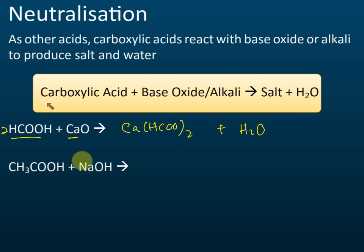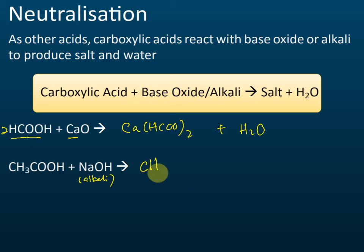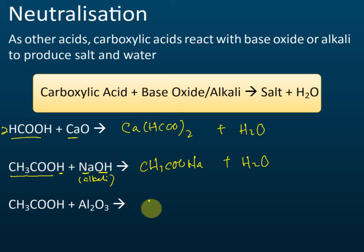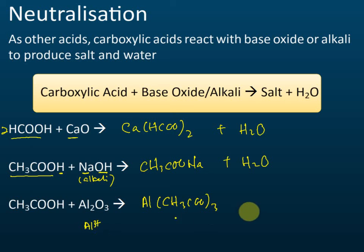This next example uses an alkali: ethanoic acid with sodium hydroxide. It produces CH₃COO⁻ reacting with Na⁺ to give CH₃COONa (sodium ethanoate), plus water H₂O, since the OH⁻ combines with H⁺. Another example: ethanoic acid with aluminium oxide gives Al(CH₃COO)₃ because aluminium has a 3+ charge, plus water.